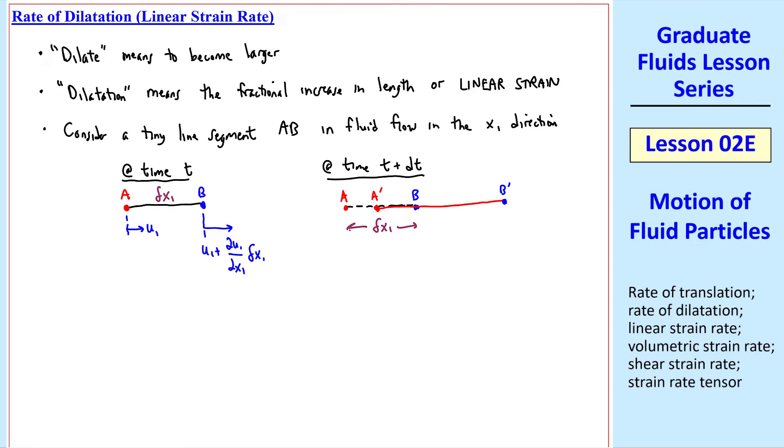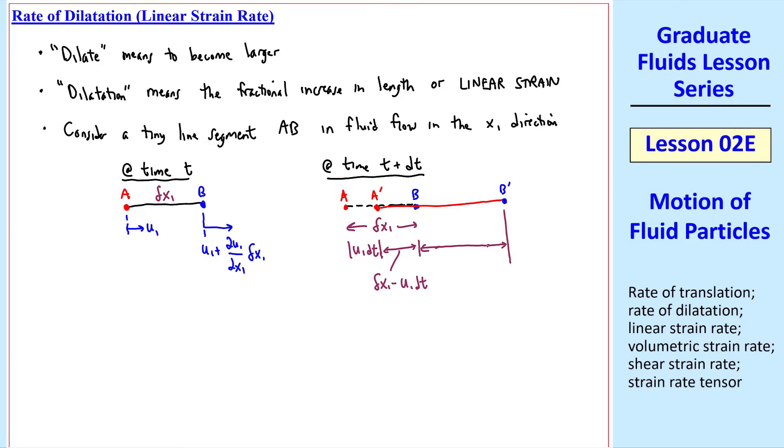The original length is delta x1. The distance from A to A prime is u1 dt. This distance, therefore, would be delta x1 minus u1 dt.